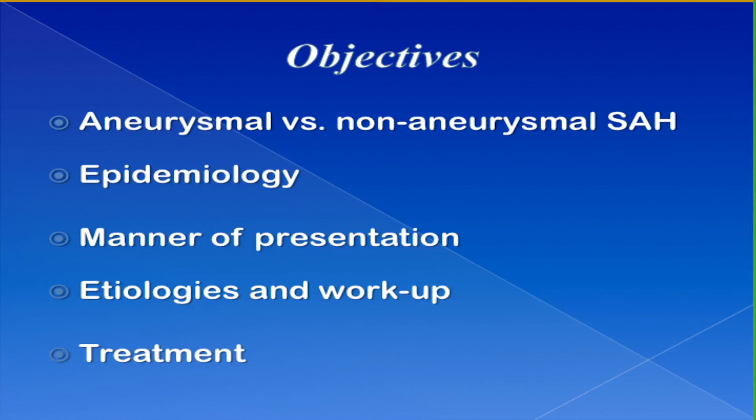What I wanted to do in this presentation is make a differentiation between aneurysmal and non-aneurysmal subarachnoid hemorrhage, review some of the epidemiology of cortical subarachnoid hemorrhage, look at the manner of presentation, look at etiologies and workup in particular, and then cover some of the treatment.